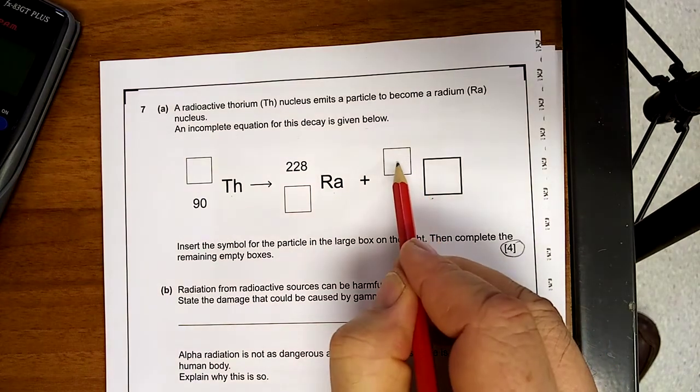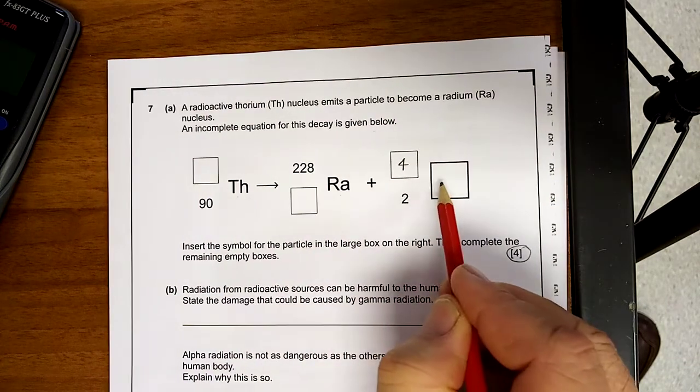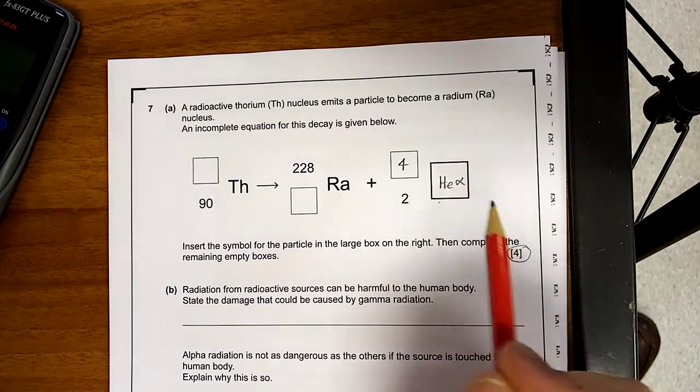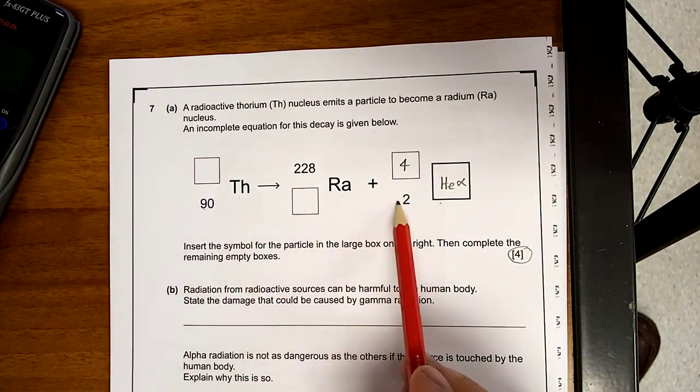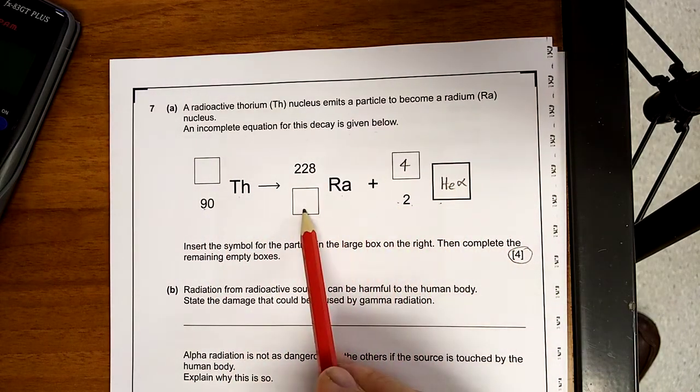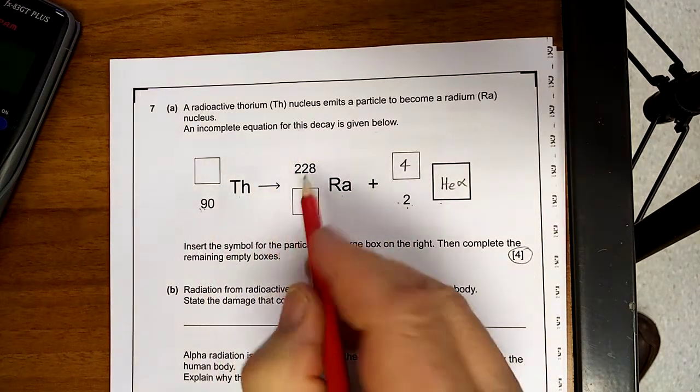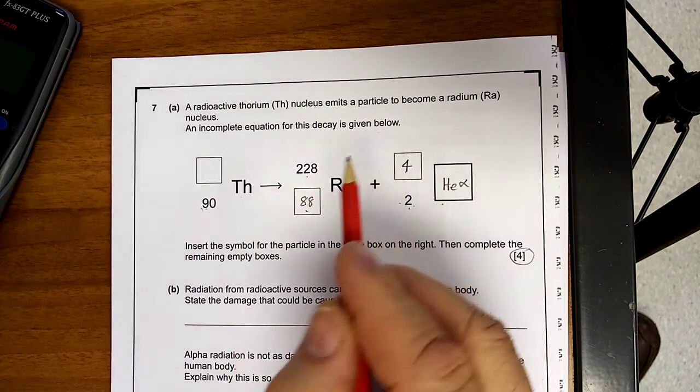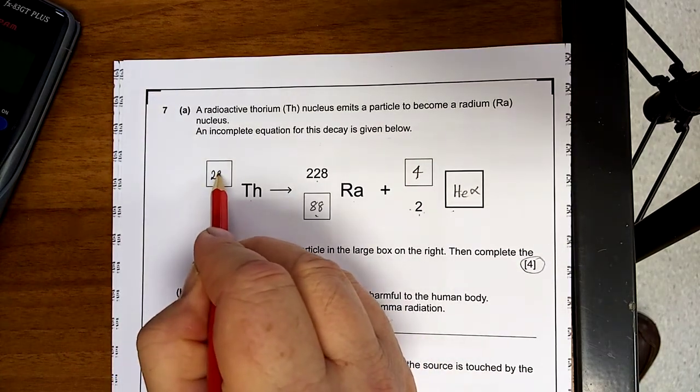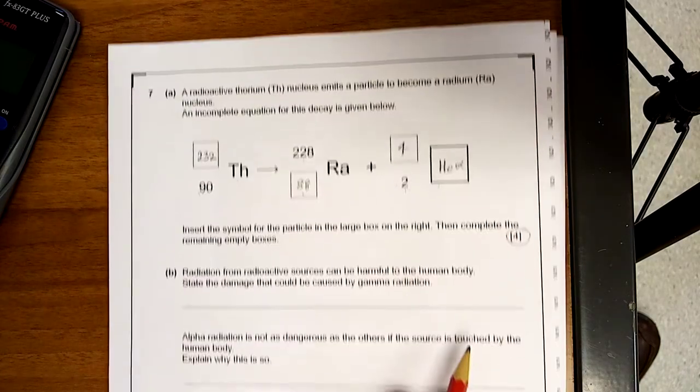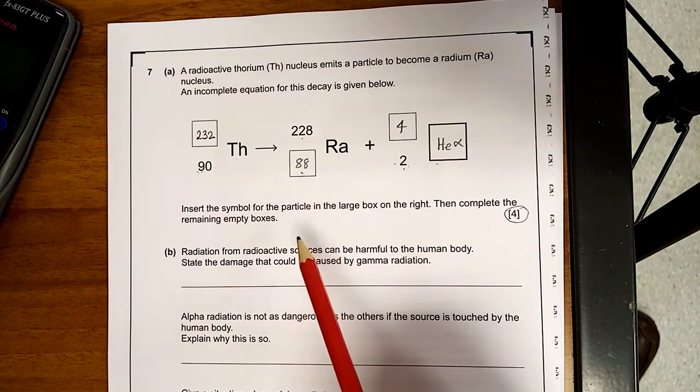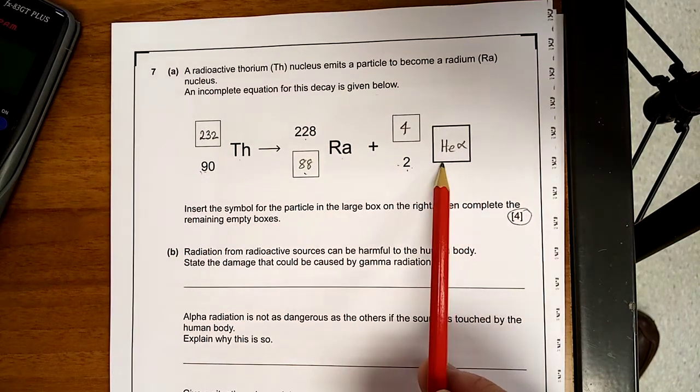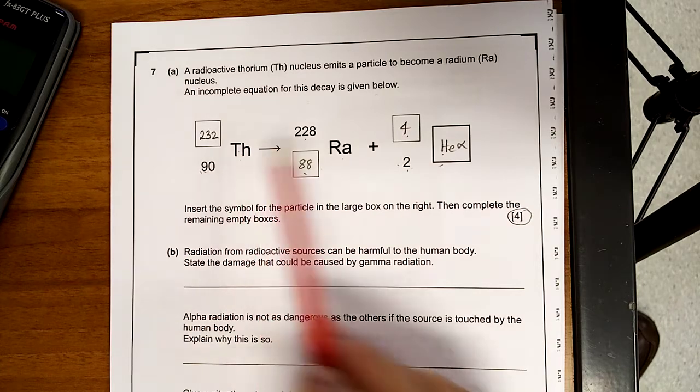So that's an alpha particle, 4, 2, HE, you can put in alpha there if you wish. Now remember these numbers along the bottom all add up, so some number add 2 gives me 90, so it must be 88. 228 add 4 must be 232. That's it done, and that's 4 marks for that.